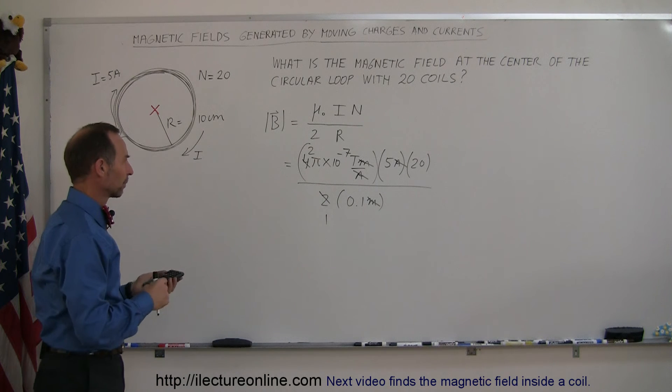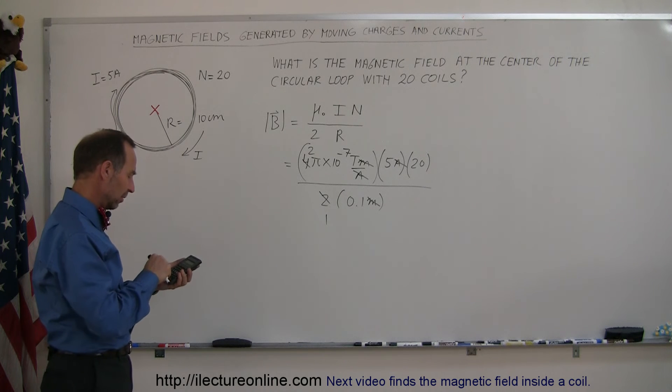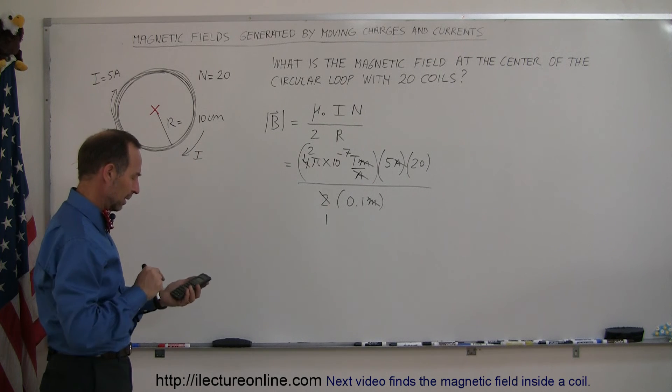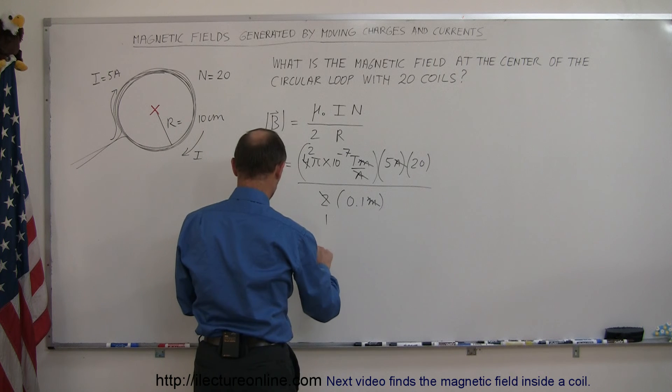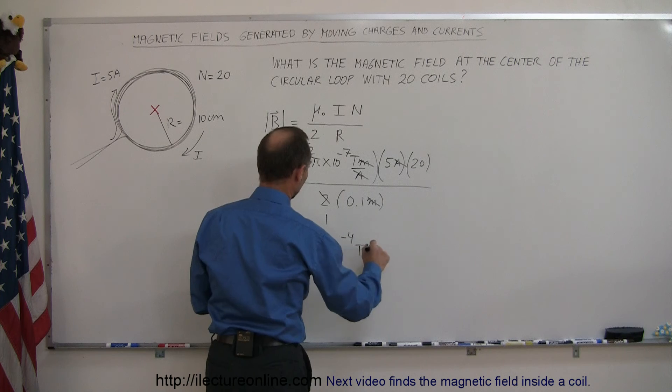So we have 2 times 10 to the minus 7 times pi times 5 times 20 divided by 0.1, and the magnetic field at the center has a magnitude of 6.28 times 10 to the minus 4 teslas.